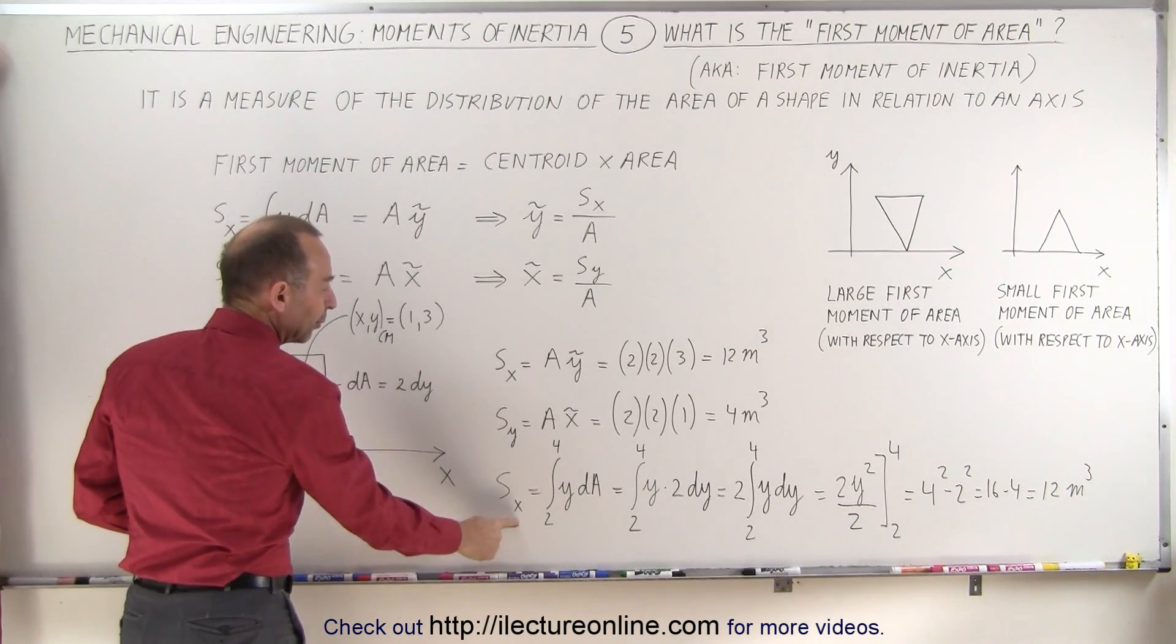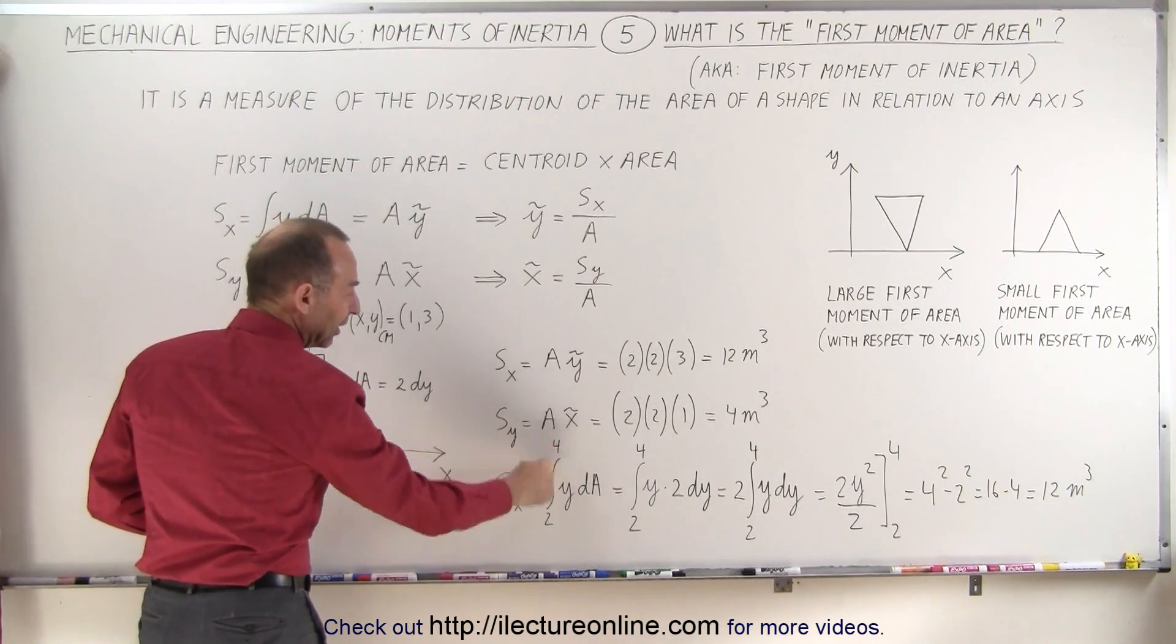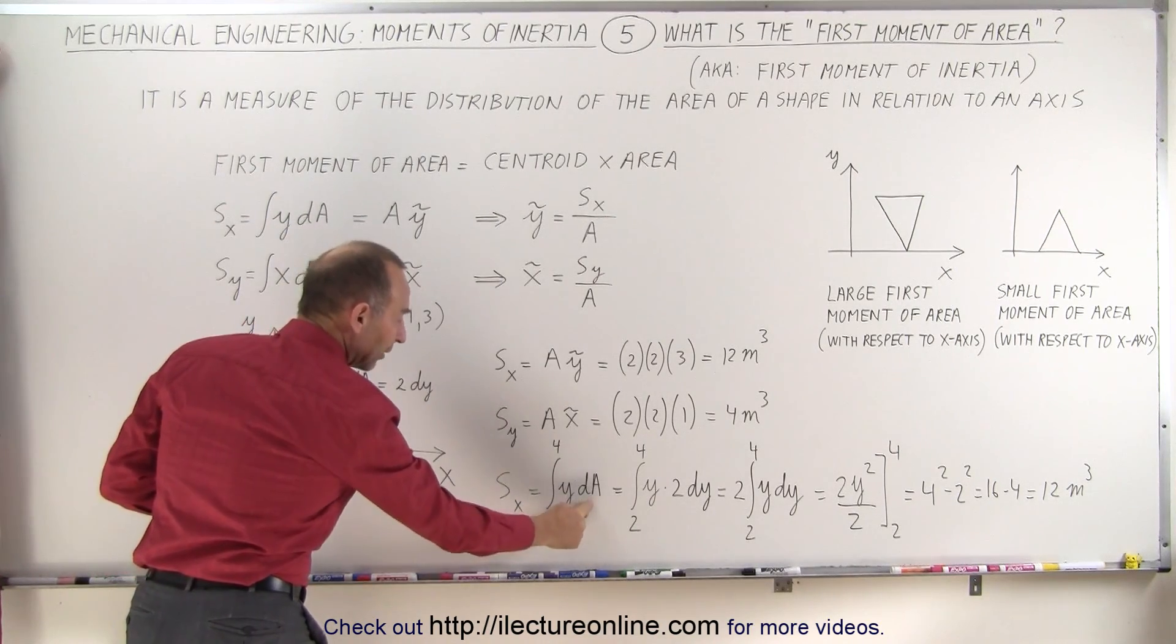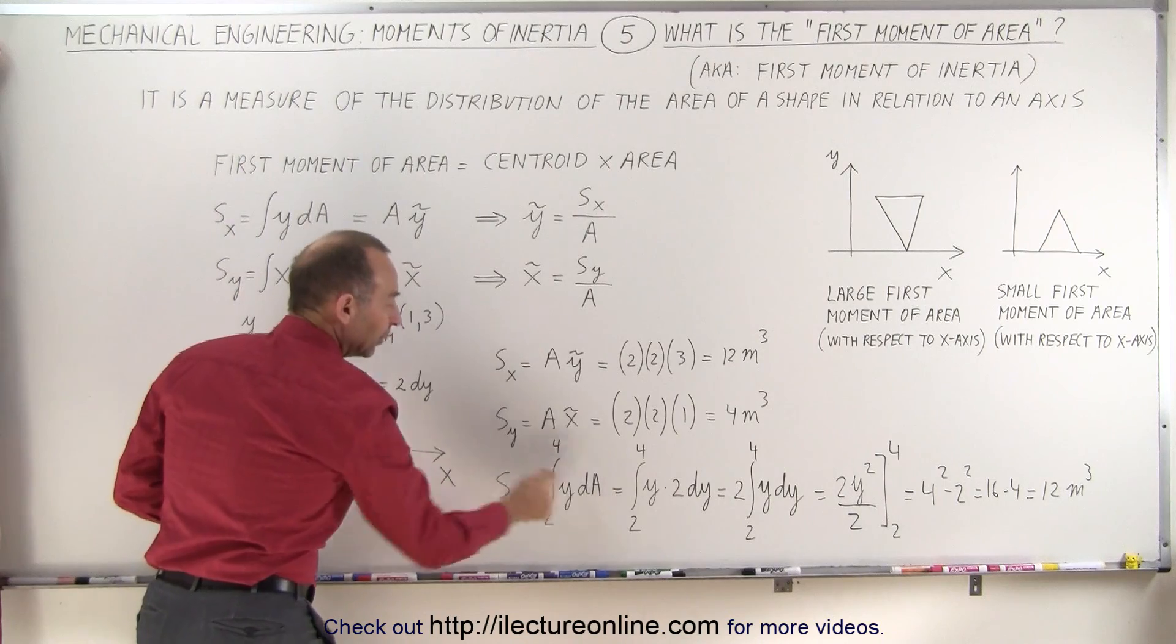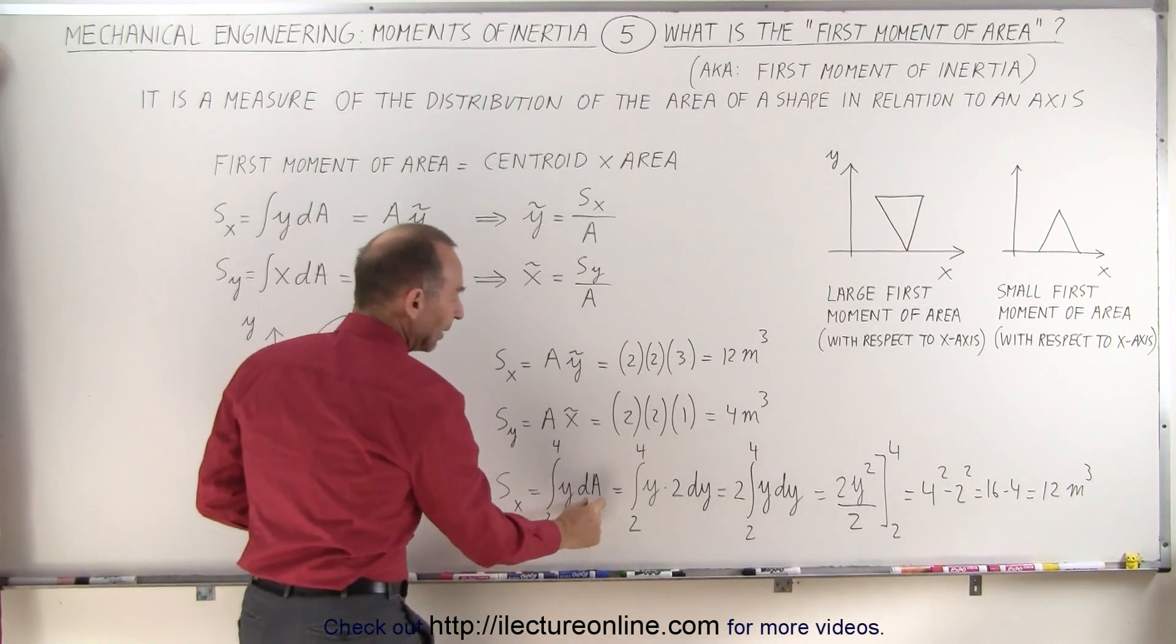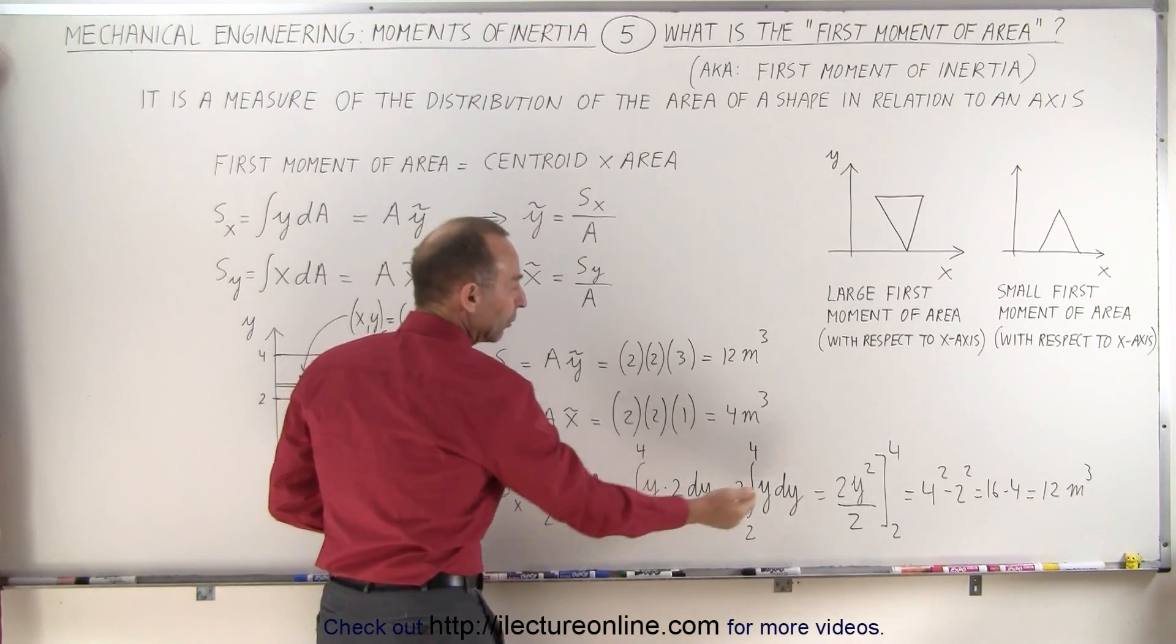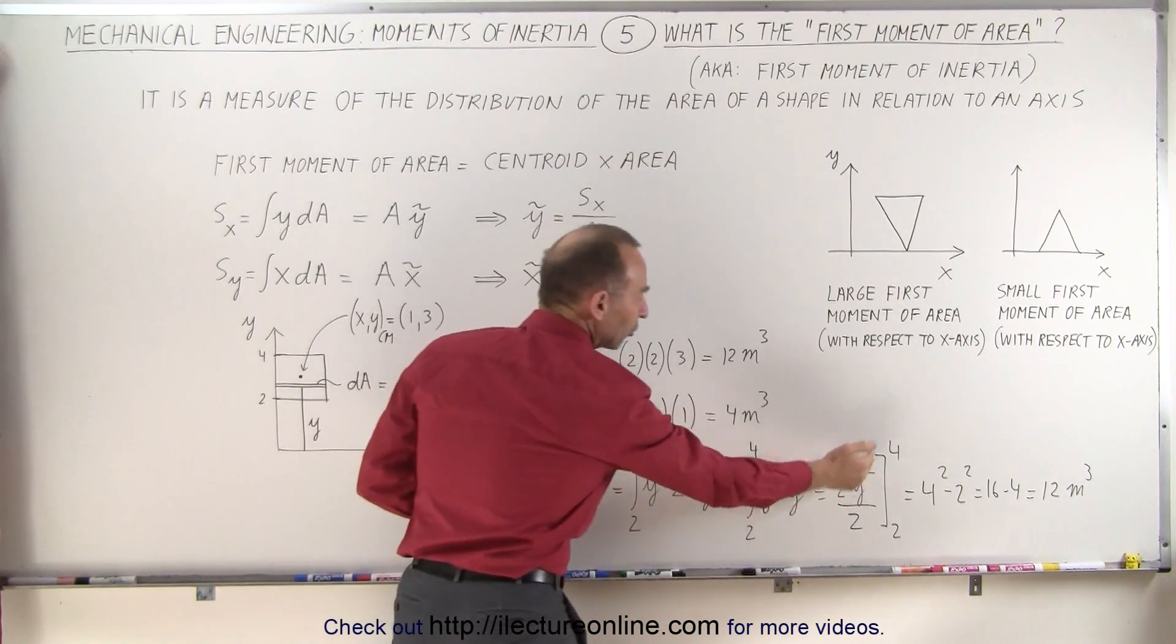So the first moment of area with respect to the x-axis is the integral from 2 to 4 of y times the area element. If we then integrate that, the area element is 2 times dY. We pull the 2 out, so we integrate y times dY, which is y squared divided by 2.